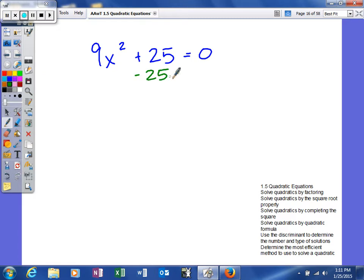So we'll go ahead and subtract 25 from both sides. When you do that, you'll get 9x squared is equal to negative 25. We'll then go ahead and divide both sides by 9.